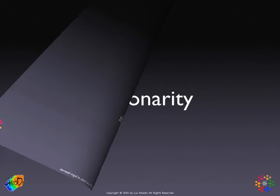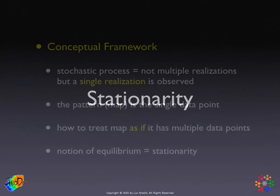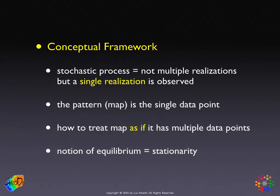Starting with stationarity: the notion of stationarity is a notion of equilibrium that we absolutely need to be able to do cross-sectional analysis. It's really a way of thinking about the world as a conceptual framework. When we observe a pattern in a cross-section across multiple locations, we don't actually have multiple observations — we have a single observation, or a single realization, of a spatial stochastic process.